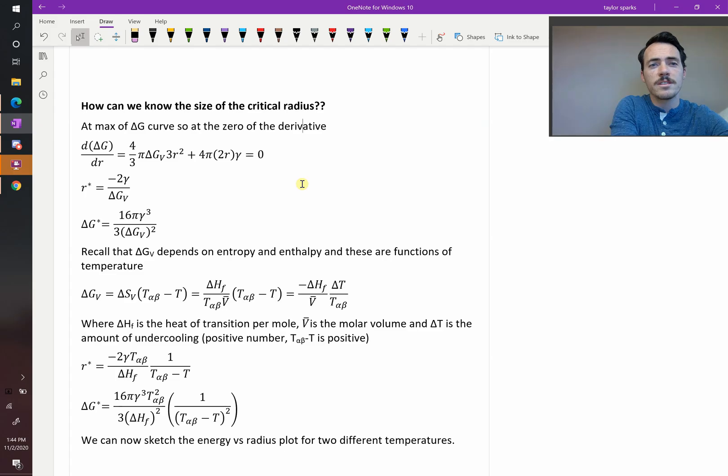If you want to calculate the size of that critical nucleus, what we need to do is we need to go back to our previous expression for delta G of the system. Delta G of the system, we're now going to take the derivative of it with respect to the size of the particle.